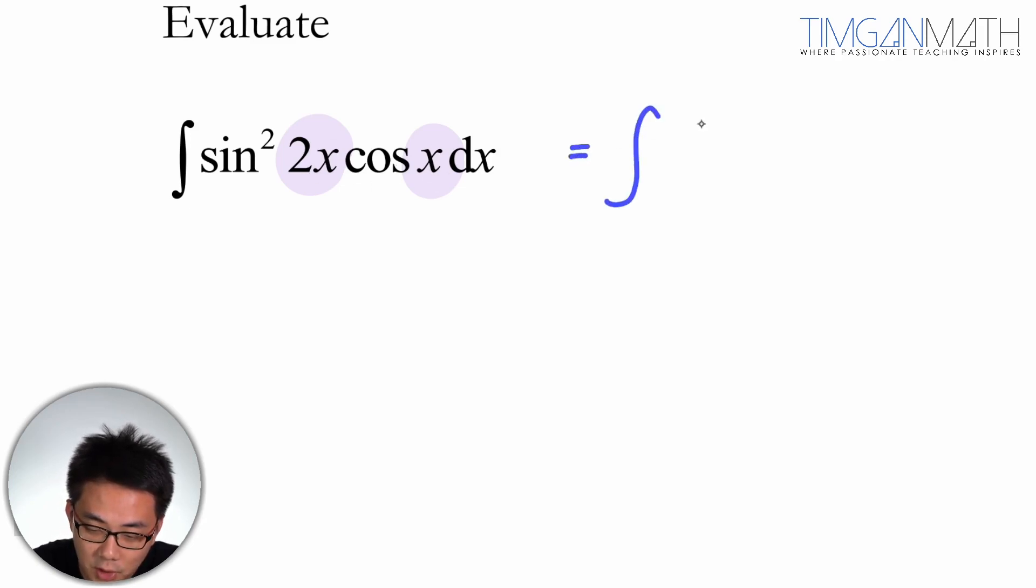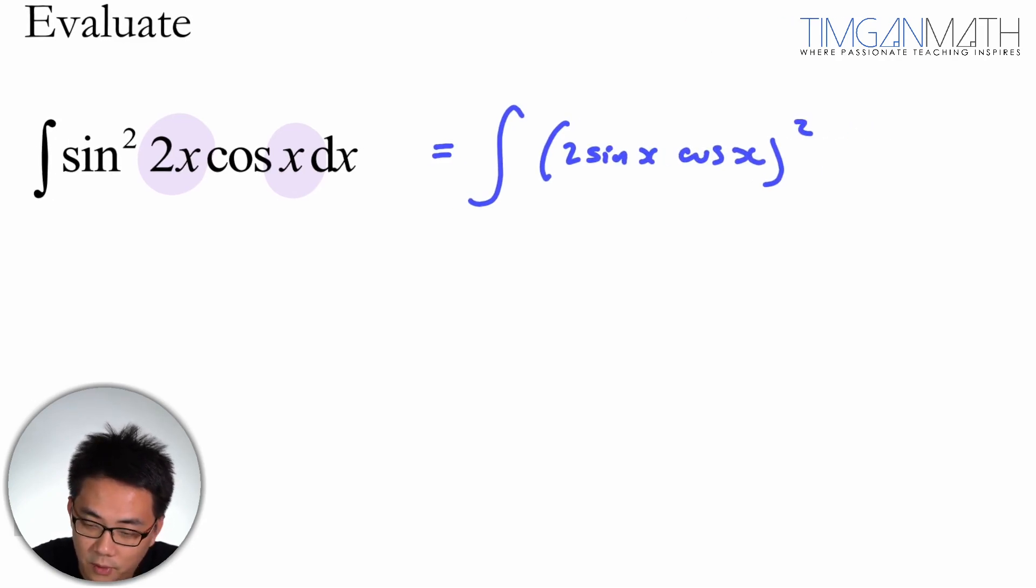So I'm just going to change this to 2 sine x cosine x, right? Because that is my sine 2x formula, this is cos x dx, okay, great.